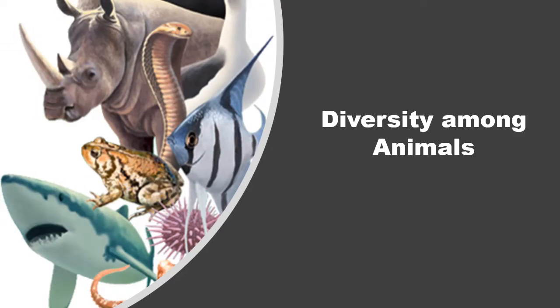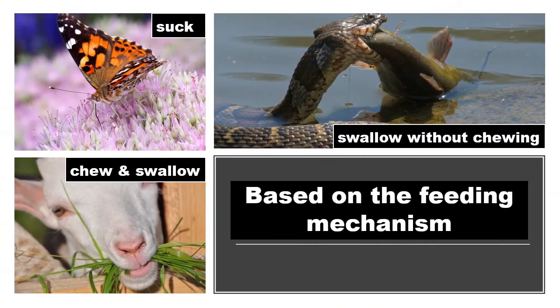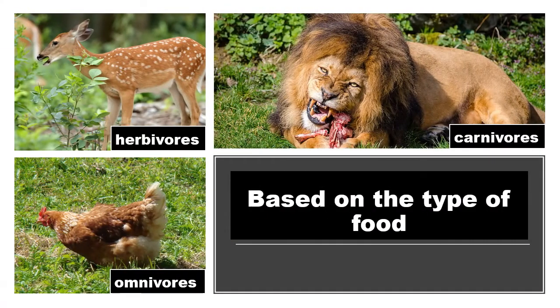Diversity among animals. Based on feeding mechanism, animals can suck, swallow without chewing, or chew and swallow. Based on the type of food, they are classified as herbivores, carnivores, or omnivores.